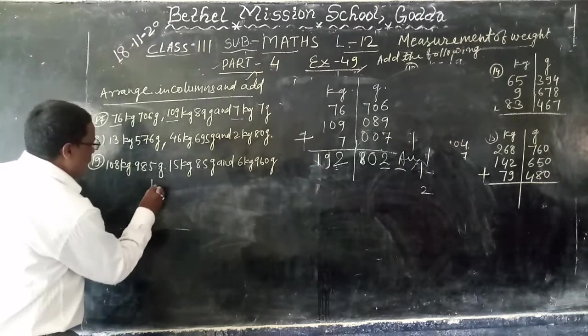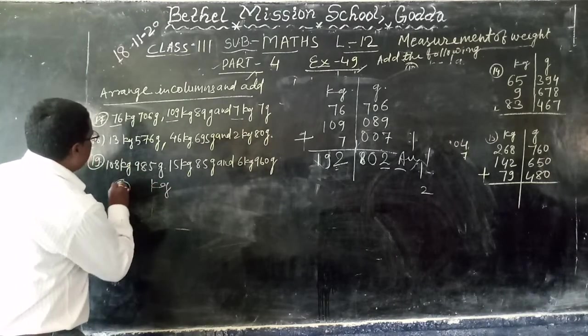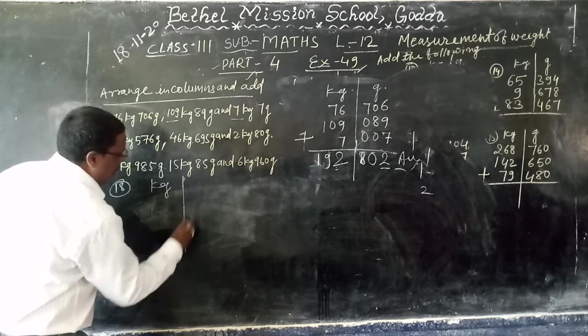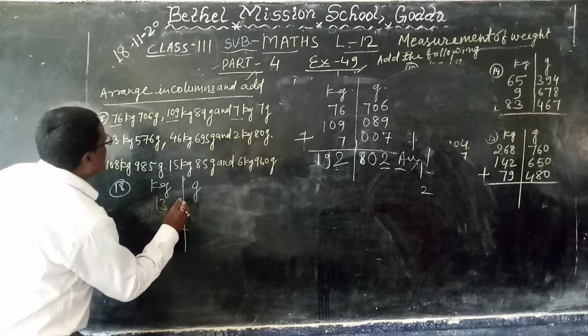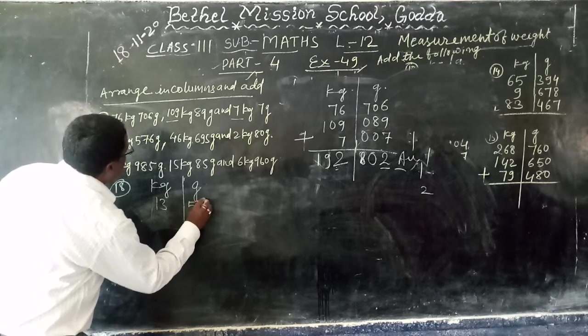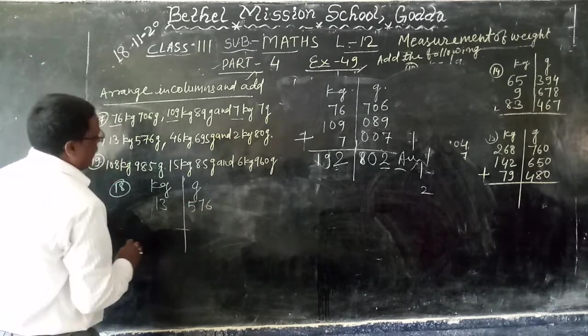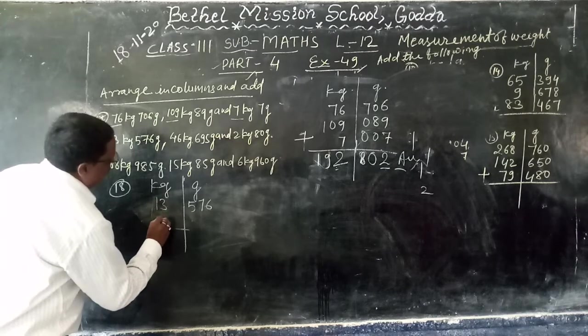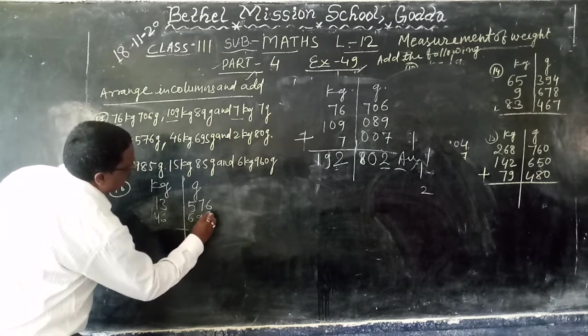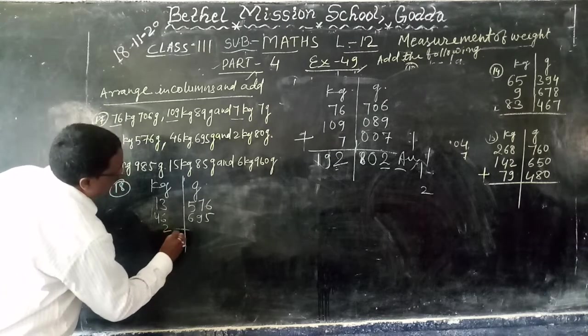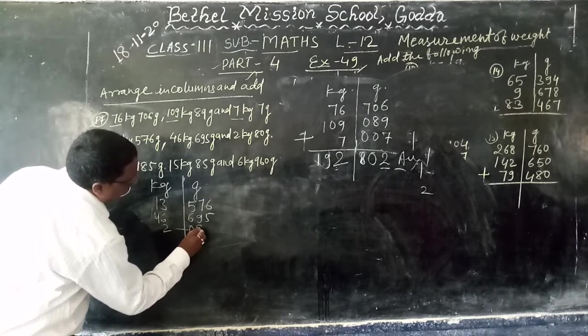kg, gram. 30 kg, 576, 46 kg, 695, 2 kg, 80 grams.